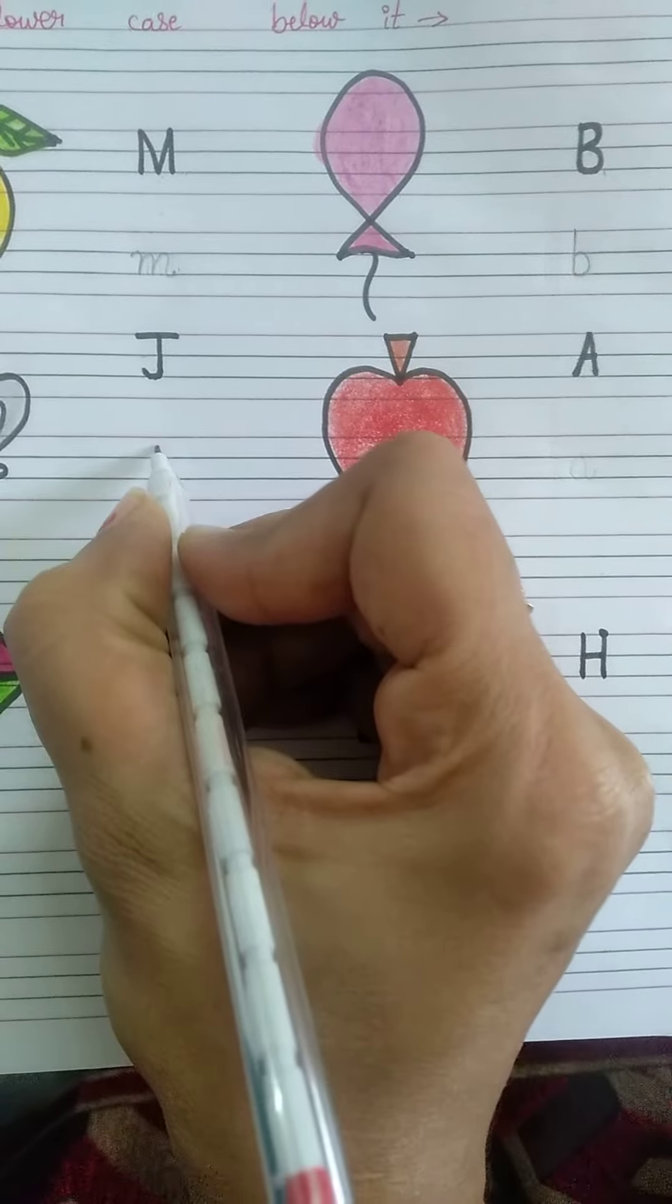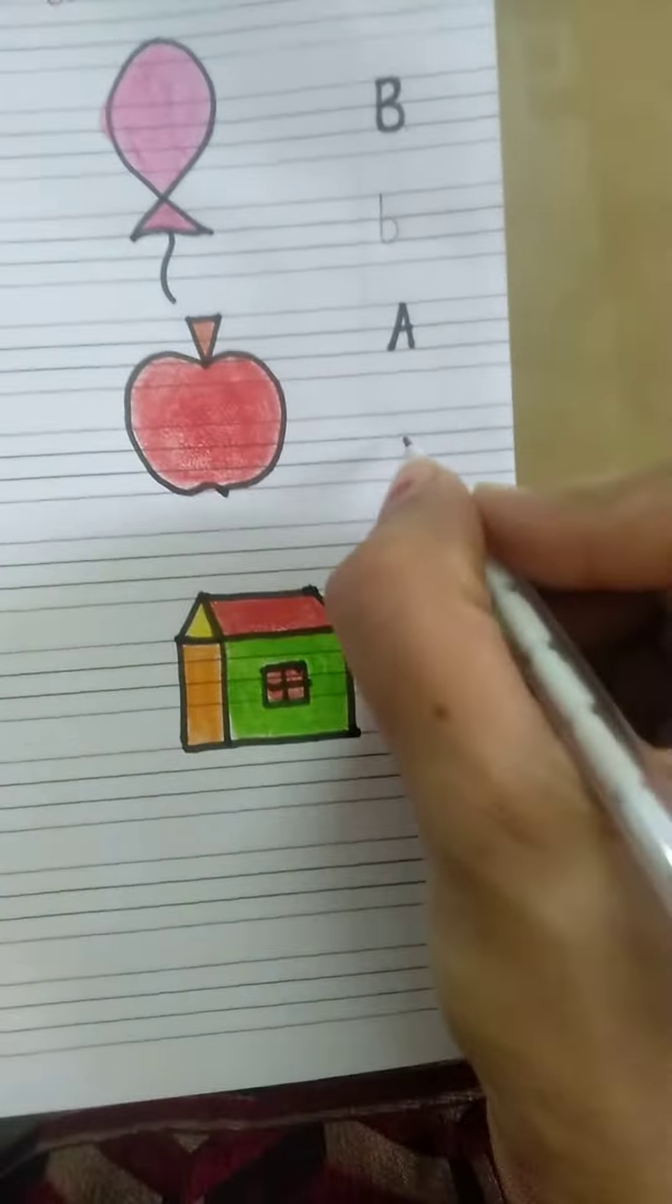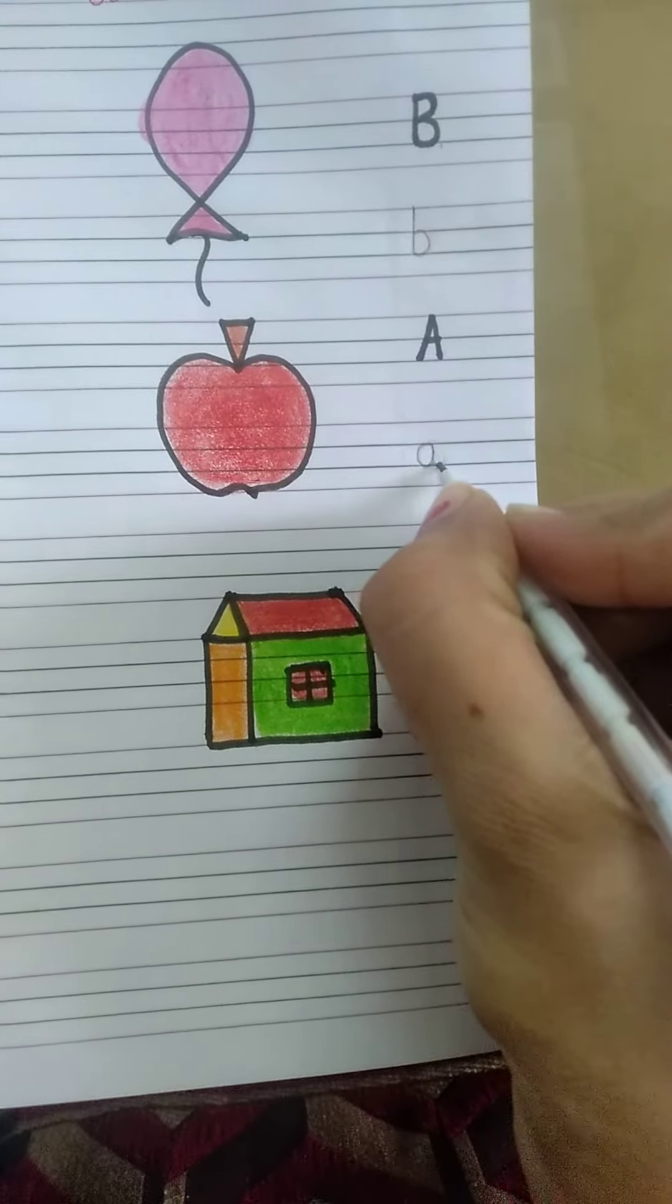Standing then curve with tail then dot. Apple. So you will write here letter A, small letter A.